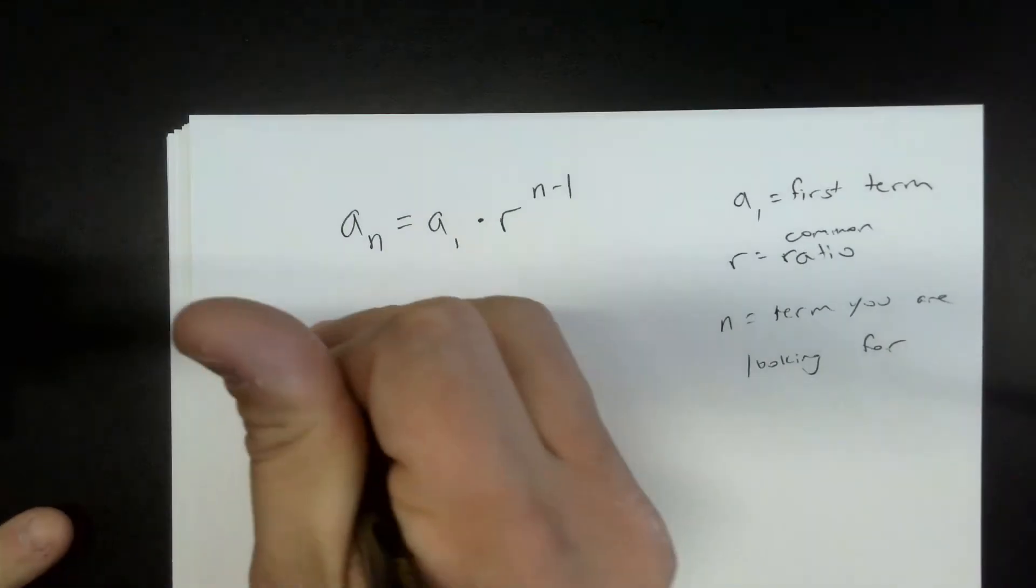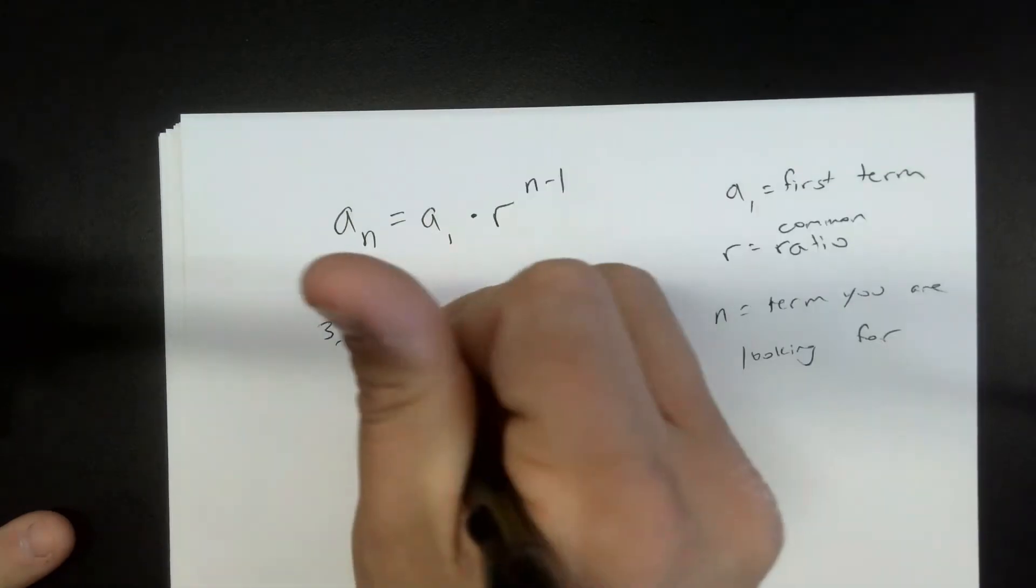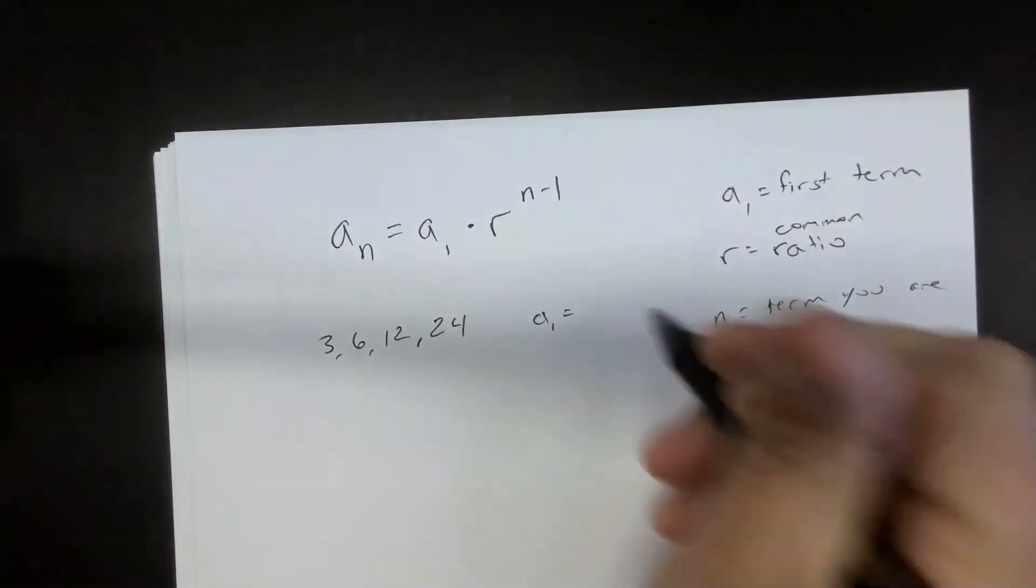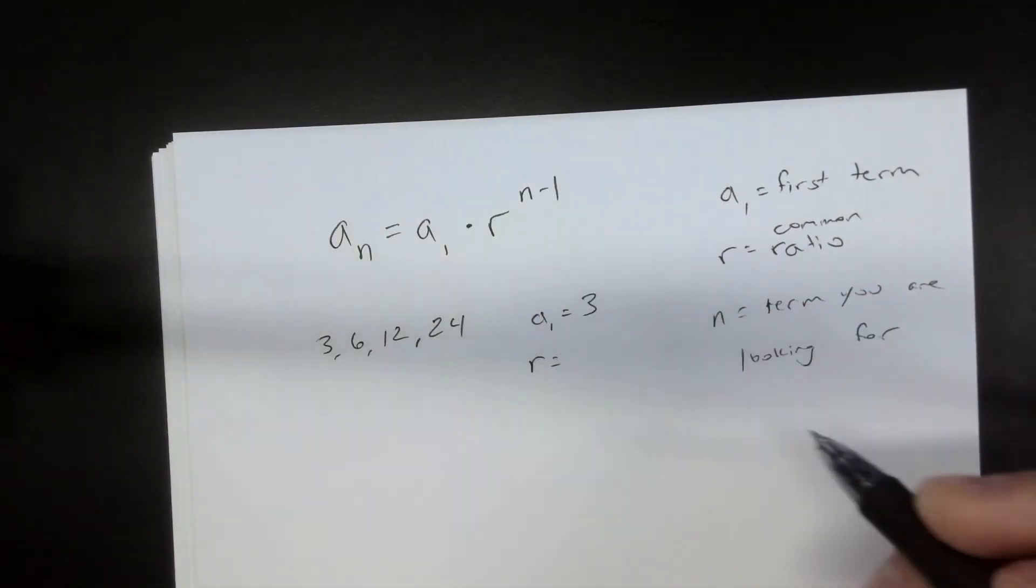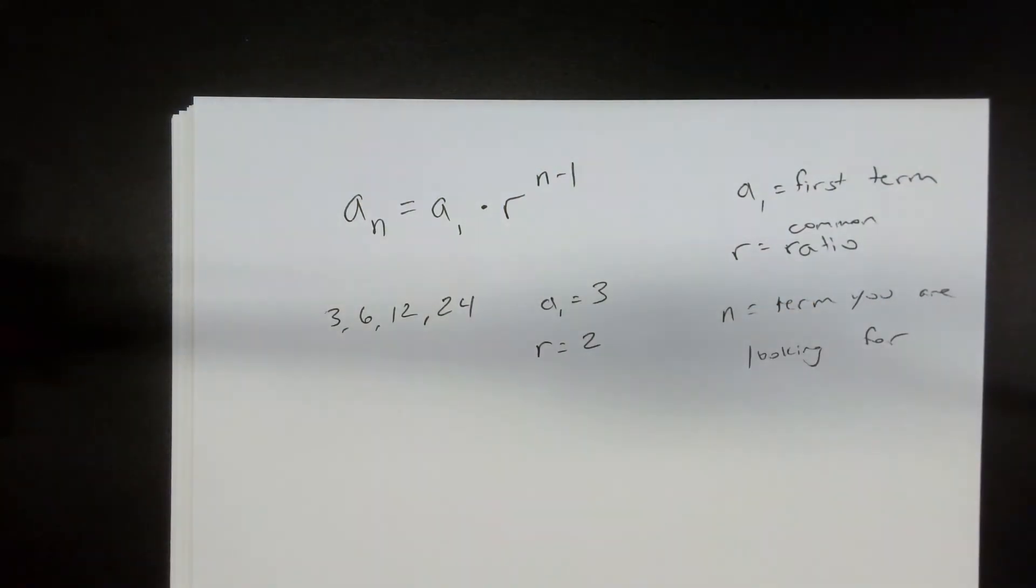So a sub 1 is the first term, r is the common ratio, n is the term you're looking for. So if this is my sequence 3, 6, 12, 24. The first thing we need to identify is what's the first term. What's our first term of this sequence? Three. What's the ratio? What is happening between each one of these numbers? We're times by two. So the ratio would be two. Does that make sense to everyone? So the ratio is two. Now, if you happen to be divided by two, it would be times by a half. Your ratio would be one half.